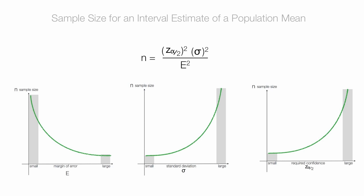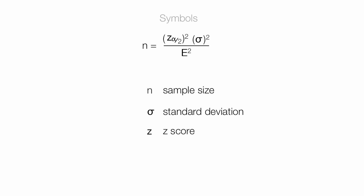I'm going to walk you through the symbols, then walk you through the calculation. n, of course, is sample size. This sigma is standard deviation. z is z-score, and there's links to some videos on z-scores below. E, capital E, is margin of error. Notice sample size is completely independent of the mean.